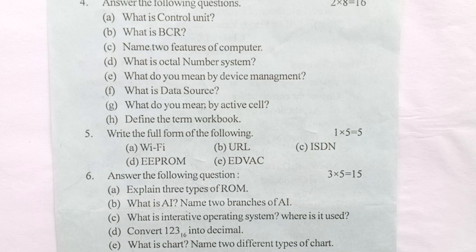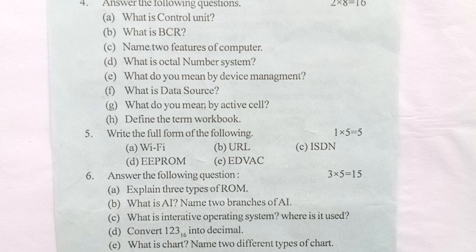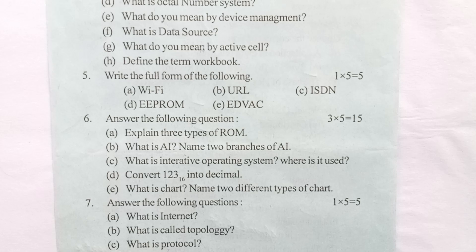Question 5: Write the full form of the following, carrying 1×5 = 5 marks. (a) Wi-Fi, (b) URL, (c) ISDN, (d) EEPROM, and (e) EDVAC.